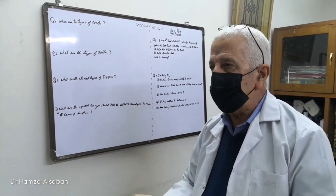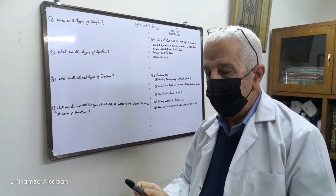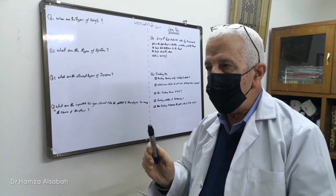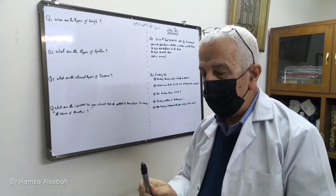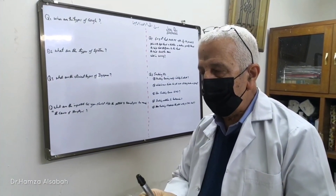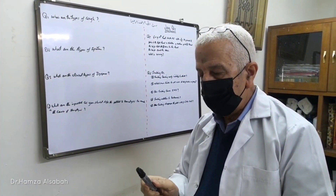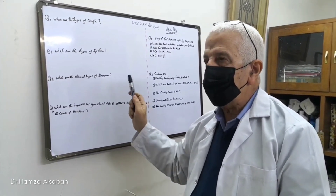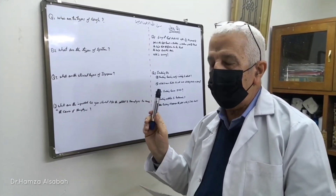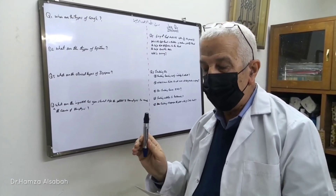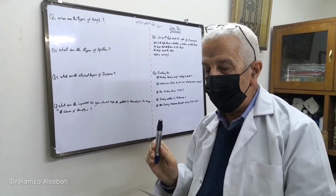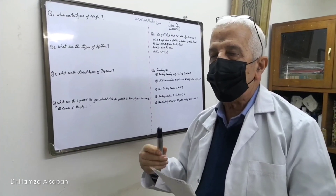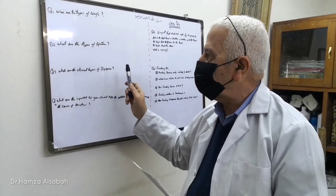The third question: what are the clinical types of dyspnea? The first type is dyspnea on lying flat immediately — this is due to diaphragm hernia or paralysis of the diaphragm.